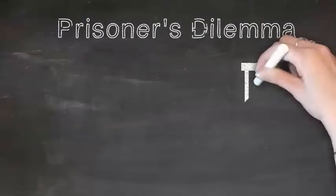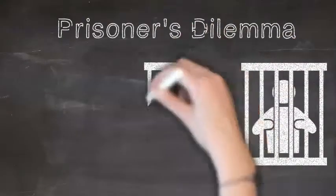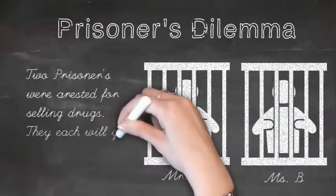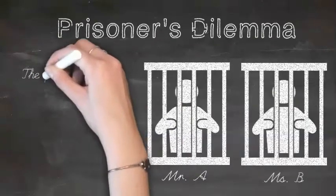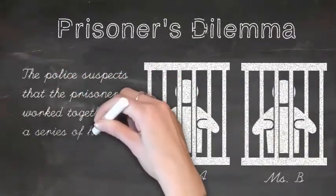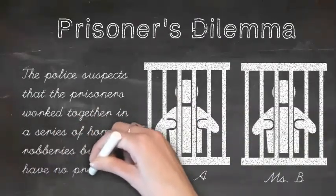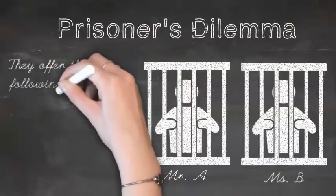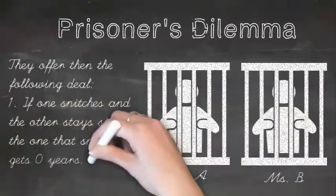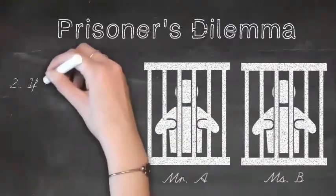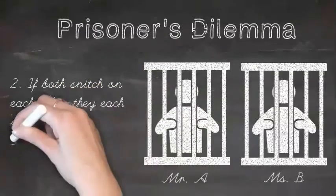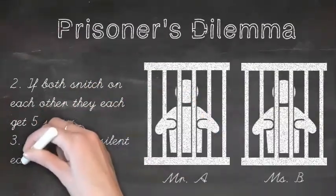The prisoner's dilemma goes like this. Imagine that there are two prisoners, Mr. A and Mrs. B. They were arrested for selling drugs and they will each get three years in prison. The police suspect that the prisoners worked together in a series of home robberies. They offer them the following deal: if one snitches and the other stays silent, the one that snitches gets zero years and the other gets ten years. If both snitch on each other, they each get five years. If both stay silent, they each get three years, which was their original sentence.